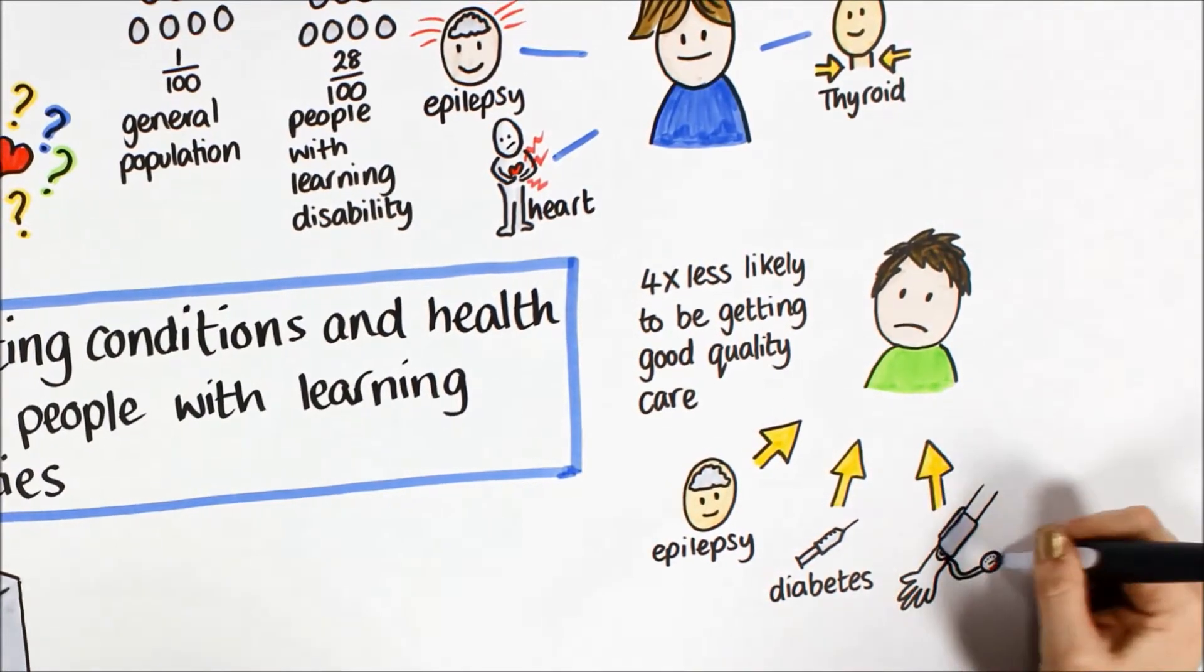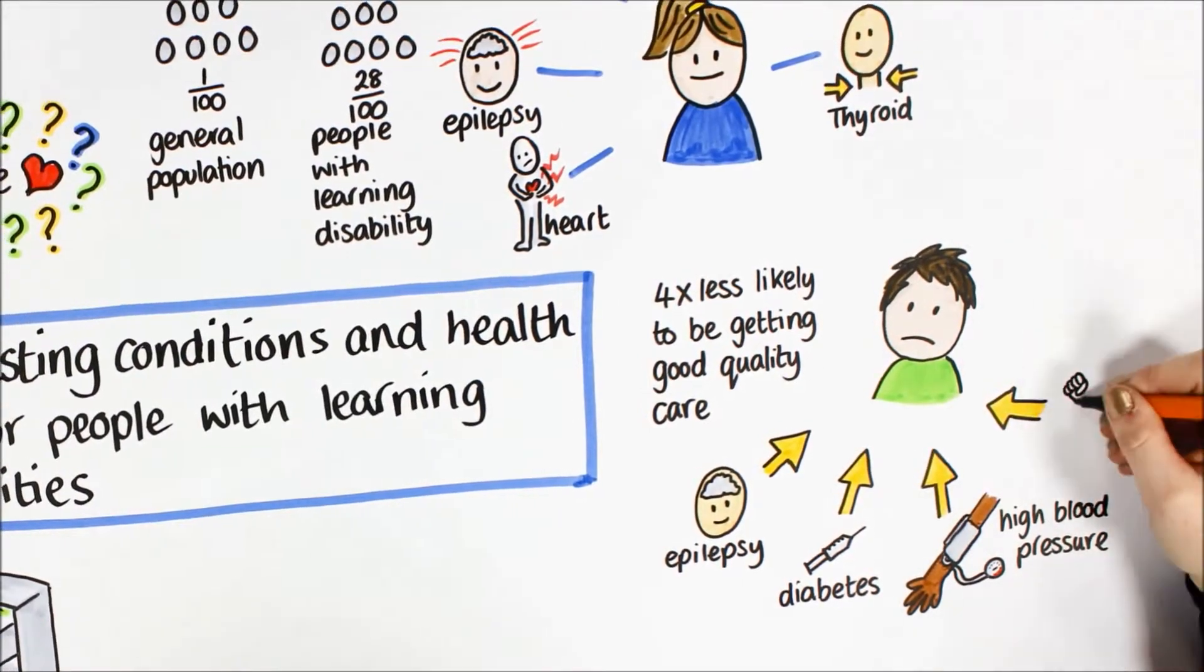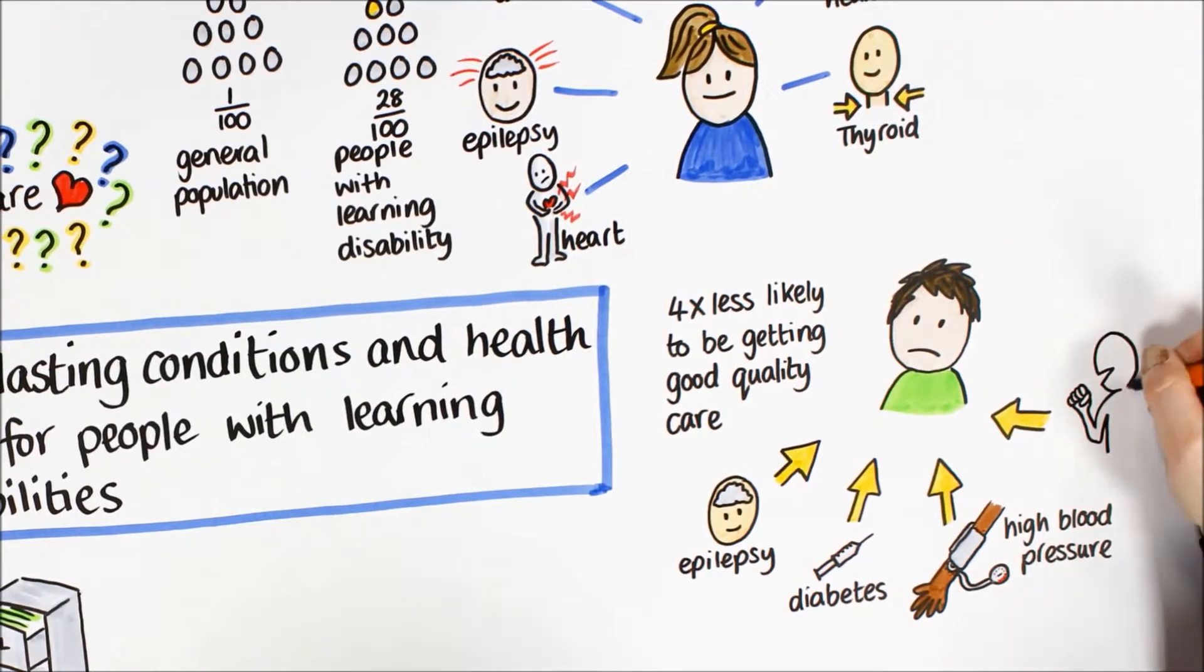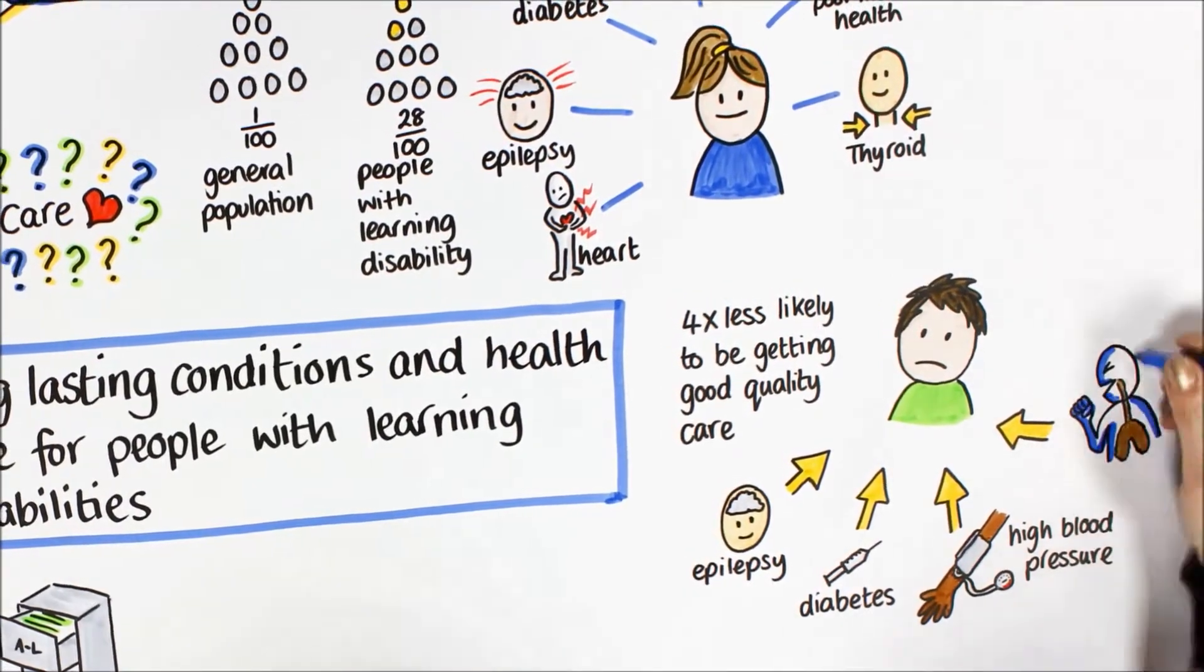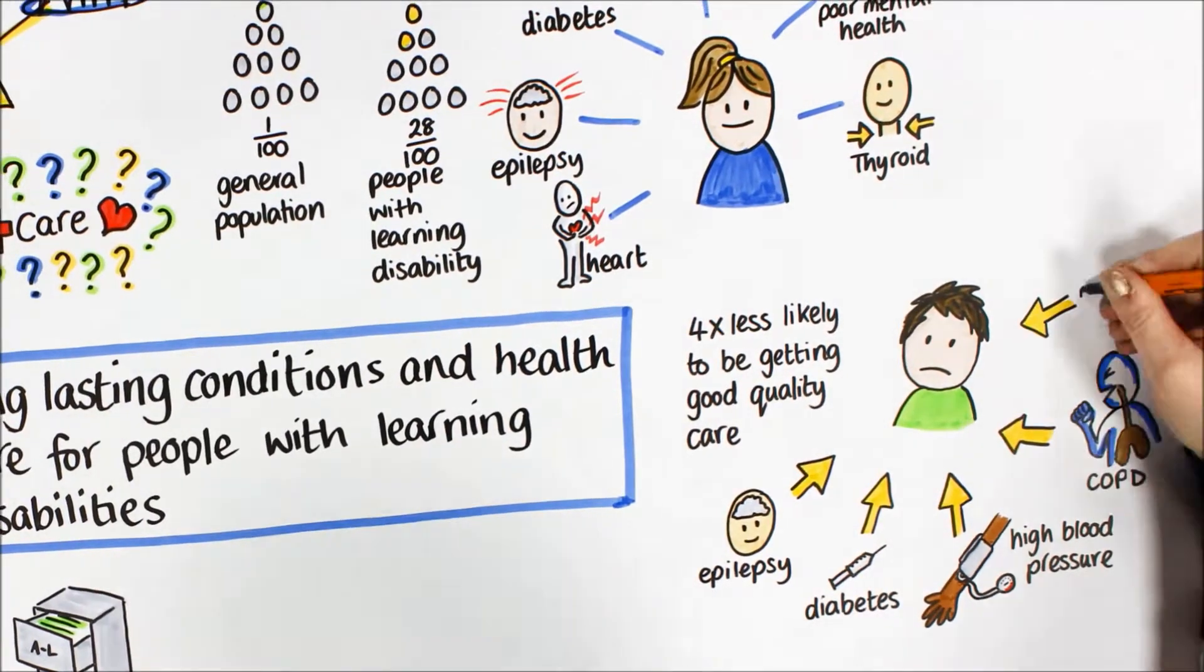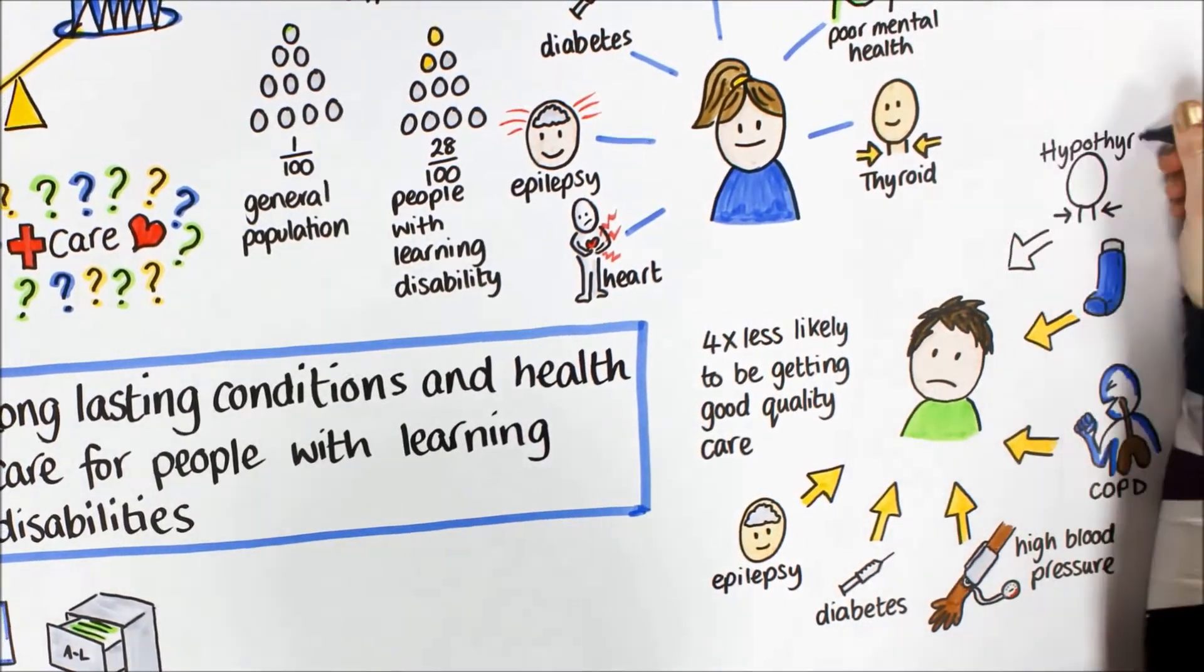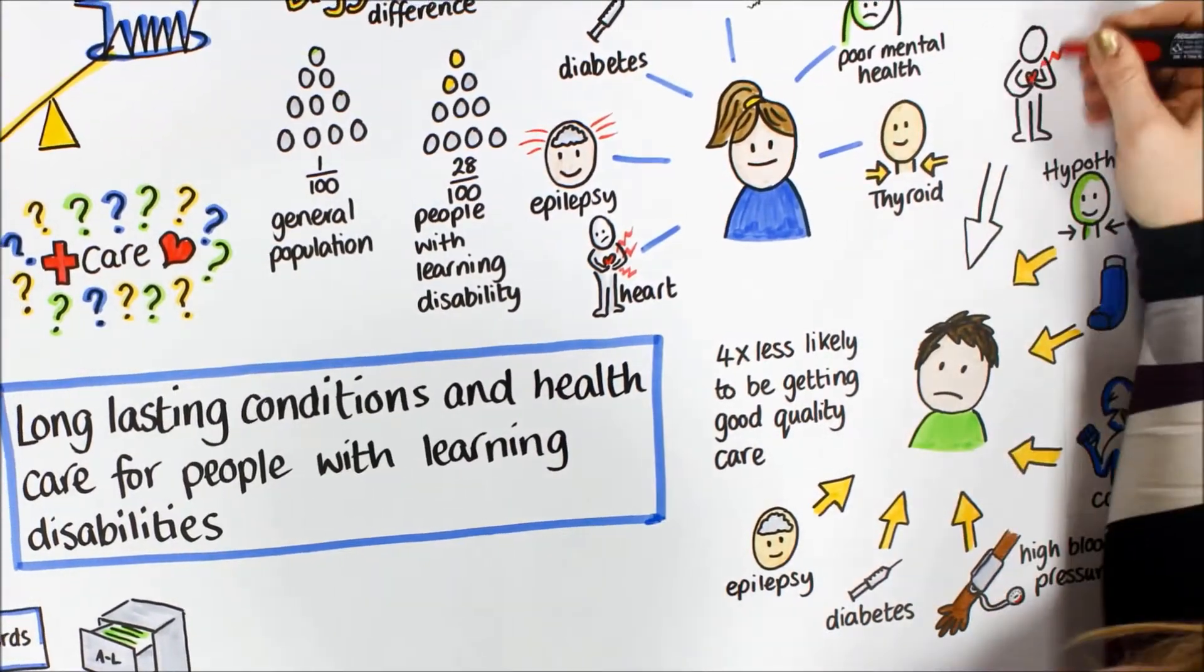This was found for a number of health conditions including epilepsy, diabetes, high blood pressure, chronic obstructive pulmonary disease which causes difficulty breathing, asthma, hypothyroidism also known as an underactive thyroid which can make you feel tired and put on weight, and heart failure where the heart struggles to pump blood around your body properly.